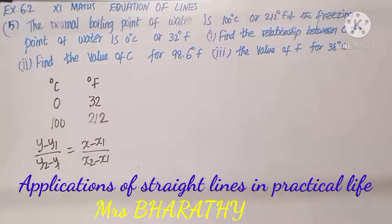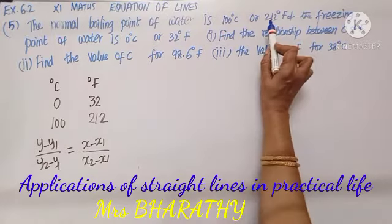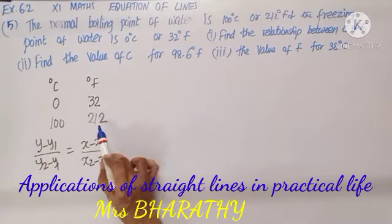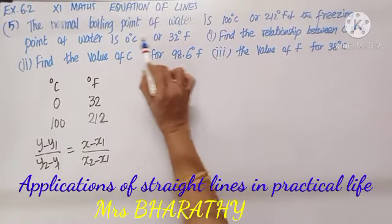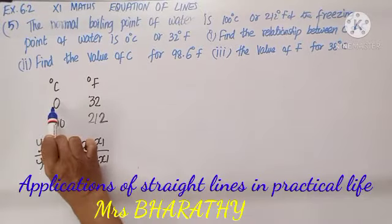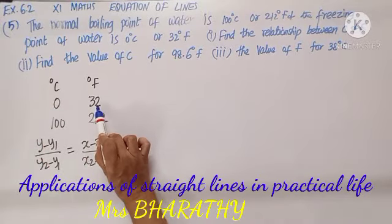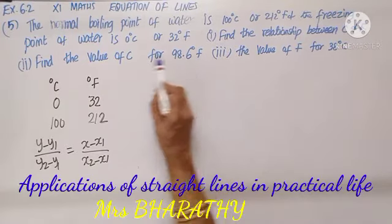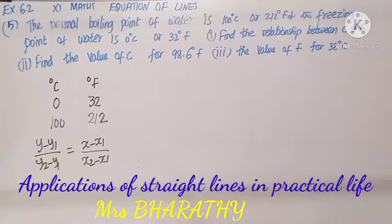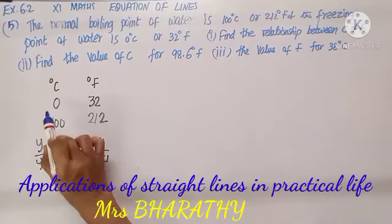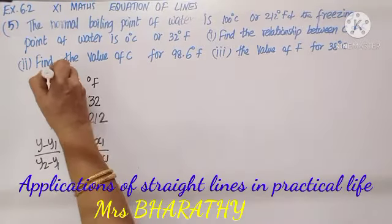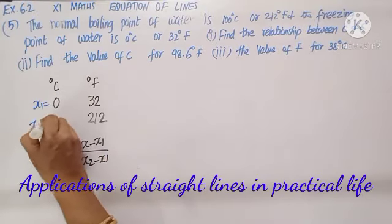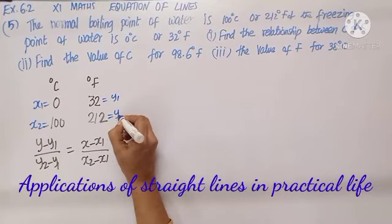The normal boiling point of water is 100 degrees Celsius or 212 degrees Fahrenheit. The freezing point of water is 0 degrees Celsius or 32 degrees Fahrenheit. We need to find the relationship between C and F — if F is given, find C; if C is given, find F. Let us call Fahrenheit as X and Celsius as Y, taking X1, X2 and Y1, Y2 accordingly.